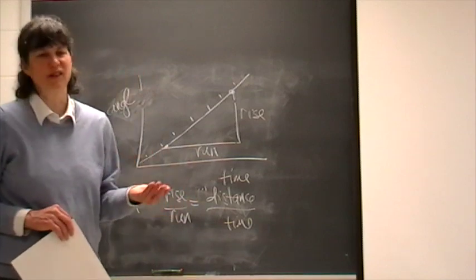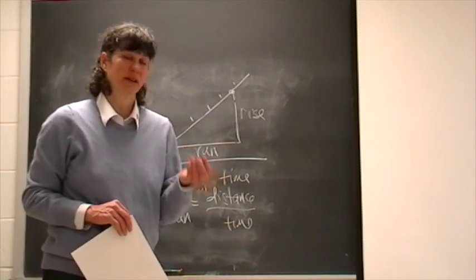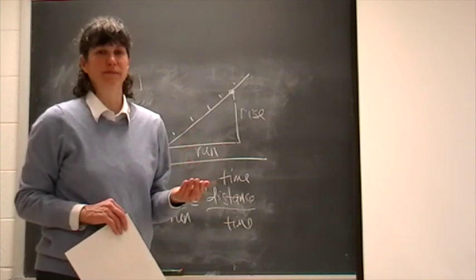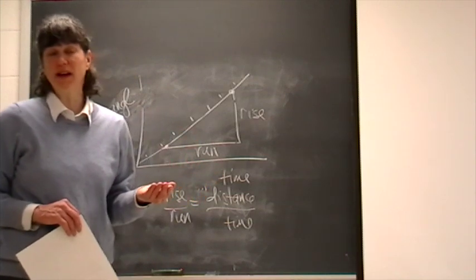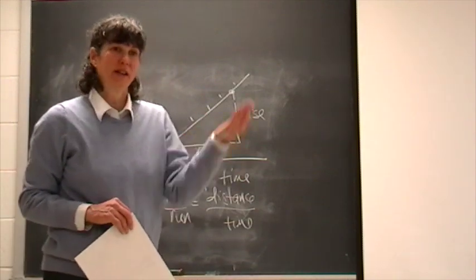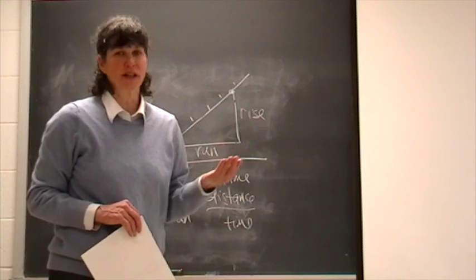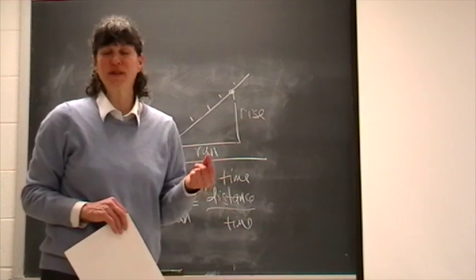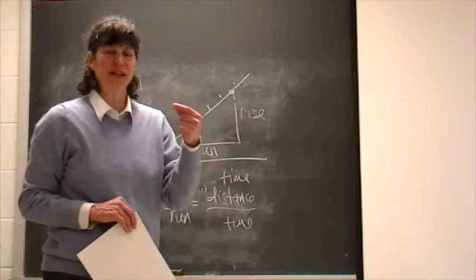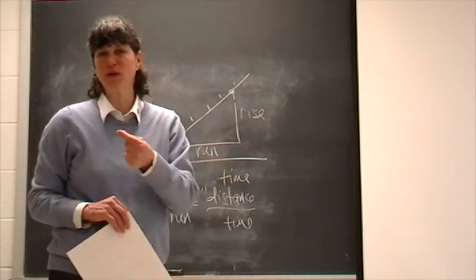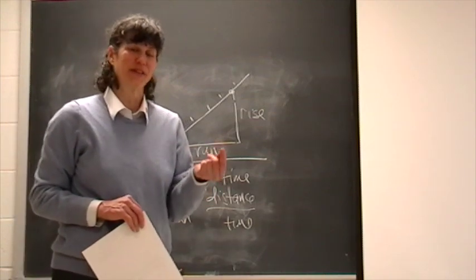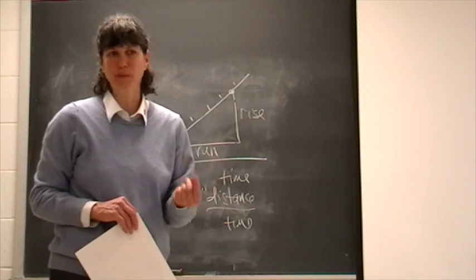So for example, you may determine that the star travels 20 degrees every hour. Now if you think about how long it would take a star to go once around the sky, a complete circle takes 360 degrees. And so if a star is moving 20 degrees every hour and you take 360 degrees by 20 degrees per hour, what you would get is you would get about 18 hours for the length of the day on this particular planet.